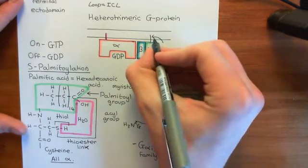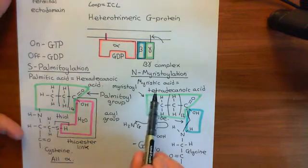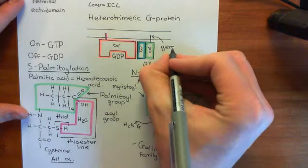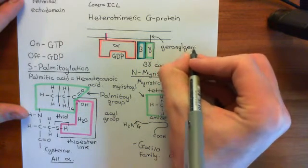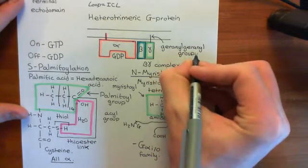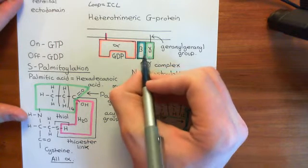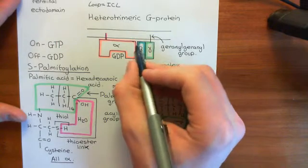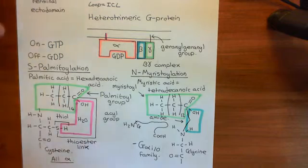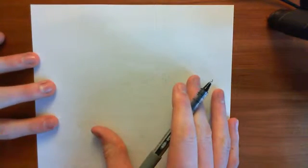The lipid moiety on the gamma subunit is a different one - not palmitic acid and not myristic acid. This is what is known as a geranylgeranyl group, added onto cysteine residues within the polypeptide of the gamma subunit. Note that the beta subunit does not need a lipid moiety, because it always remains bound to the gamma subunit which has one, so it necessarily stays attached to the inner leaflet as well. Geranylgeranyl groups are large, hydrophobic lipid moieties that interact with the phospholipid hydrophobic tails in the bilayer.